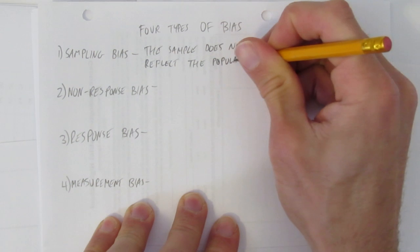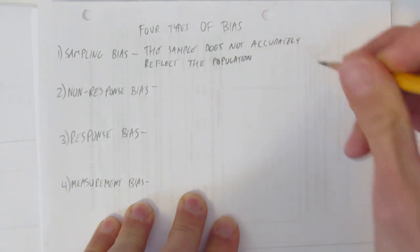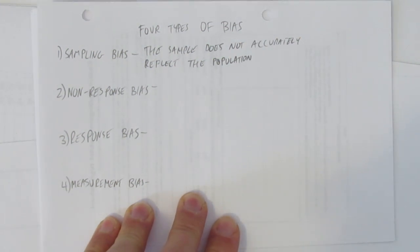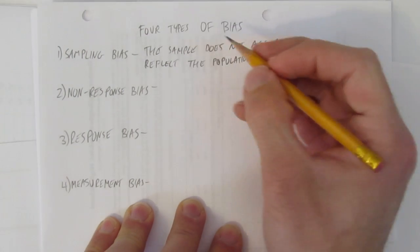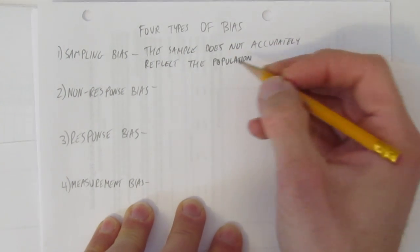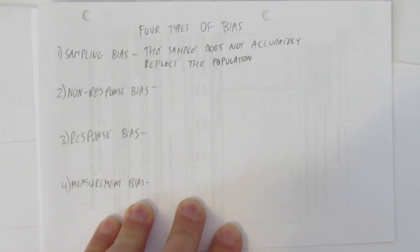This could be because you've done your sampling method incorrectly. For example, you did voluntary sampling or convenience sampling, and that gave you bias in the sample you got. That is, the group of people you got doesn't accurately reflect the population - they have different characteristics.